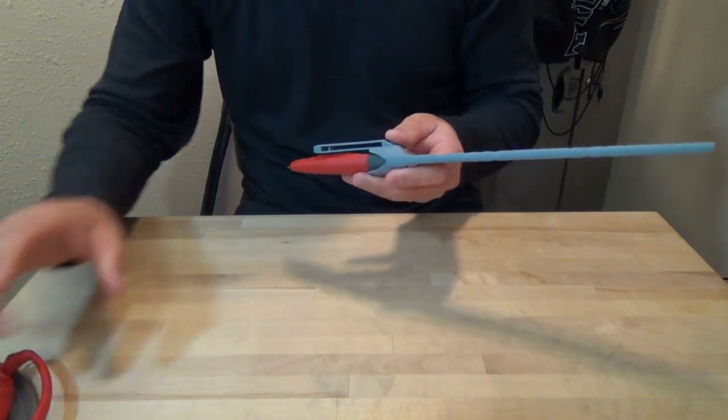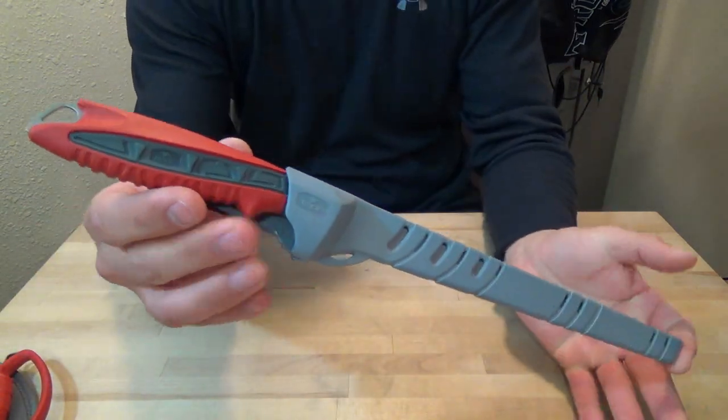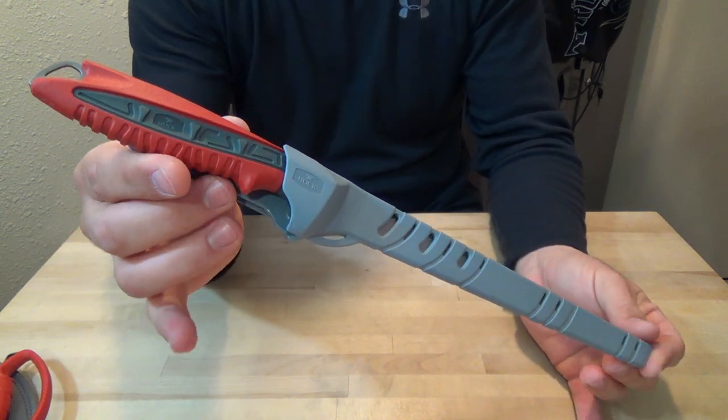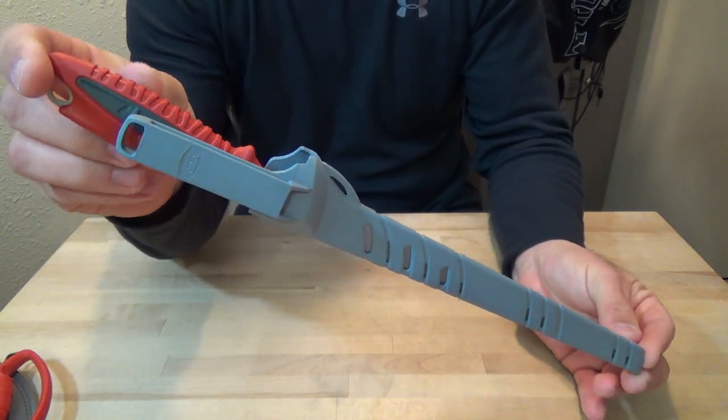Let's go ahead and get started here with a 9-inch fillet knife. It comes in a molded nylon sheath.